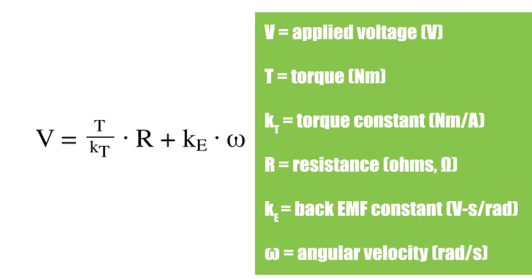Now, substituting for I in the voltage equation gives us a new voltage equation that shows the relationships between voltage, angular velocity, and torque.